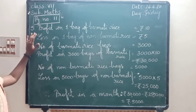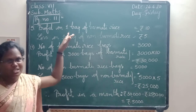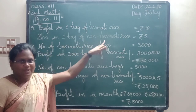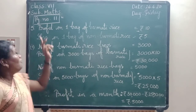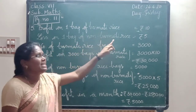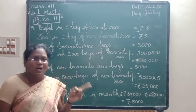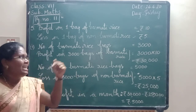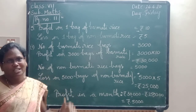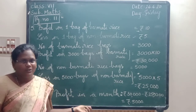So children, the next question: profit on one bag of basmati rice is 10 rupees. The question text is also very big, that's why I'm not writing on the blackboard. I'm explaining the sum verbally. Loss on one bag of non-basmati rice is 5 rupees. A merchant sold 3,000 bags of basmati rice and 5,000 bags of non-basmati rice in one month. What is the profit or loss in that month?